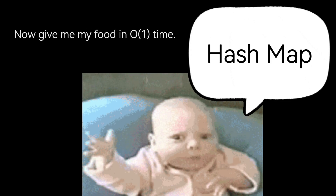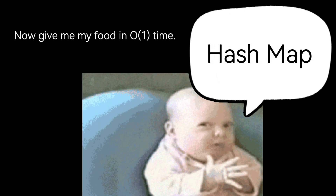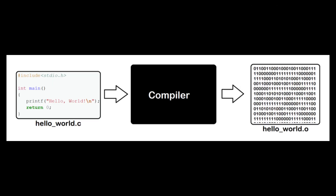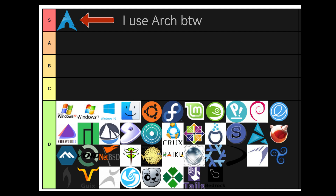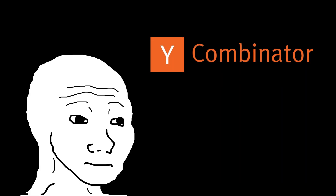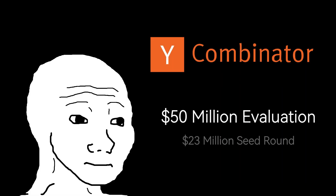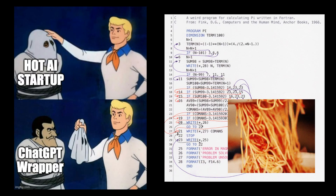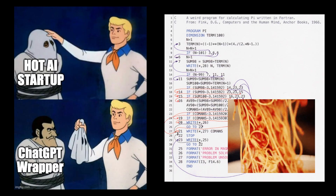His first words were not mama and dada, it was hash map. You know who I'm talking about — he works a 5 to 9 after his 9 to 5, where he's building a custom compiler or operating system from scratch. He runs a Y Combinator-backed startup on the side with a $50 million valuation that isn't just another ChatGPT wrapper or spaghetti monolith that is AI-generated slop from Gemini.